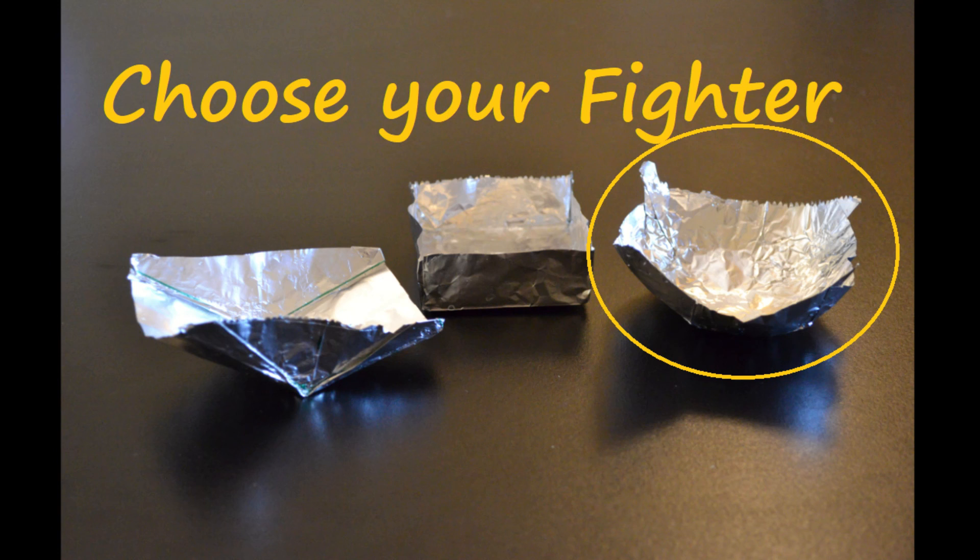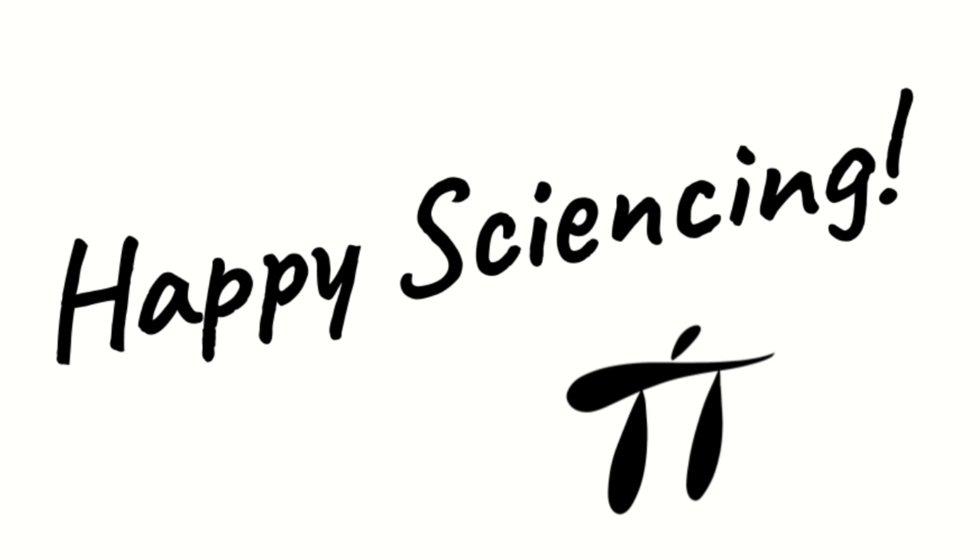Overall we saw that the results depend on how the pennies are loaded into the boat and our predictions were within the range of the resulting average number of pennies. We learned that the best shape was the sphere because it's the most reliable and had the highest average number of pennies. If you try this experiment at home let me know how it went in the comments. Thanks for watching and happy sciencing!